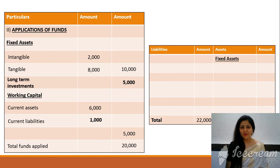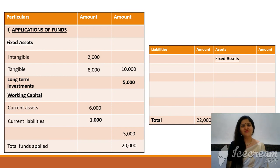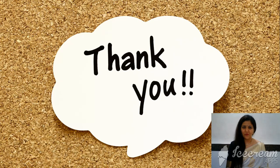Students, please remember — don't get confused. In your horizontal balance sheet, the total assets and total liabilities amount is not going to be the same as total funds applied and available in the vertical format. Please mark this. I hope you understood this format of the balance sheet clearly. The format of the income statement will be explained in the next video.